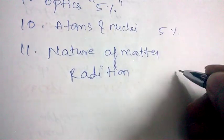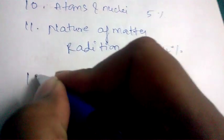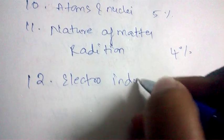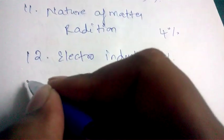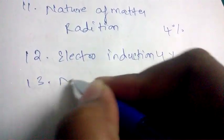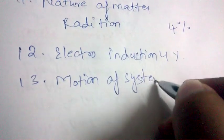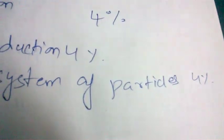Nature of Matter and Radiation carries 4% of questions. Electromagnetic Induction also carries 4% of questions. And Motion of System of Particles also carries 4% of questions in the AIMS physics question paper.